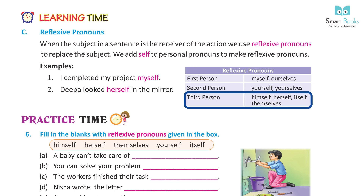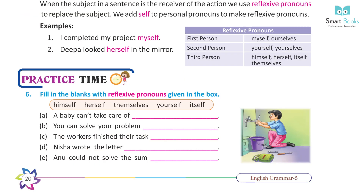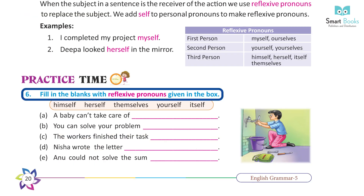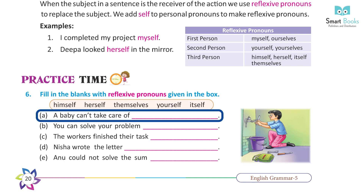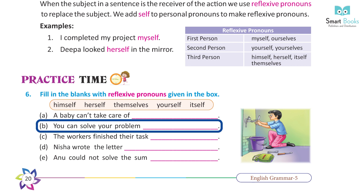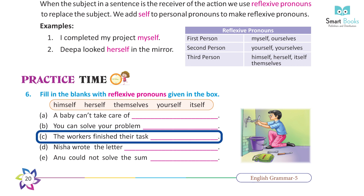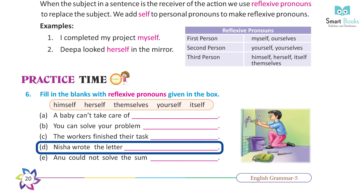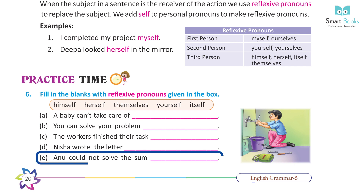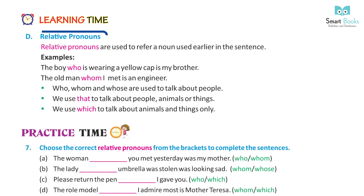Practice time — fill in the blanks with reflexive pronouns from the box. A: A baby can't take care of itself. B: You can solve your problem yourself. C: The workers finish their tasks themselves. D: Nisha wrote the letter herself. E: Anu could not solve the sum himself.